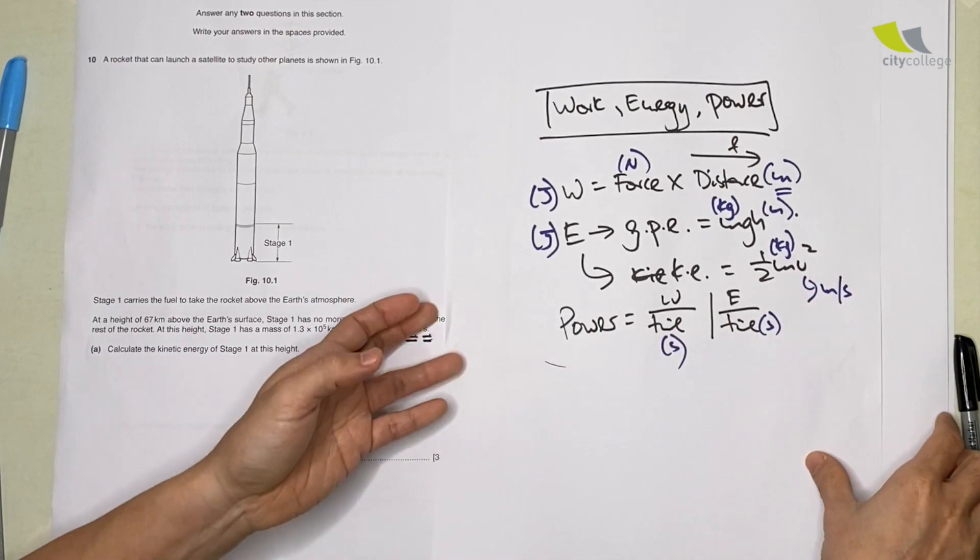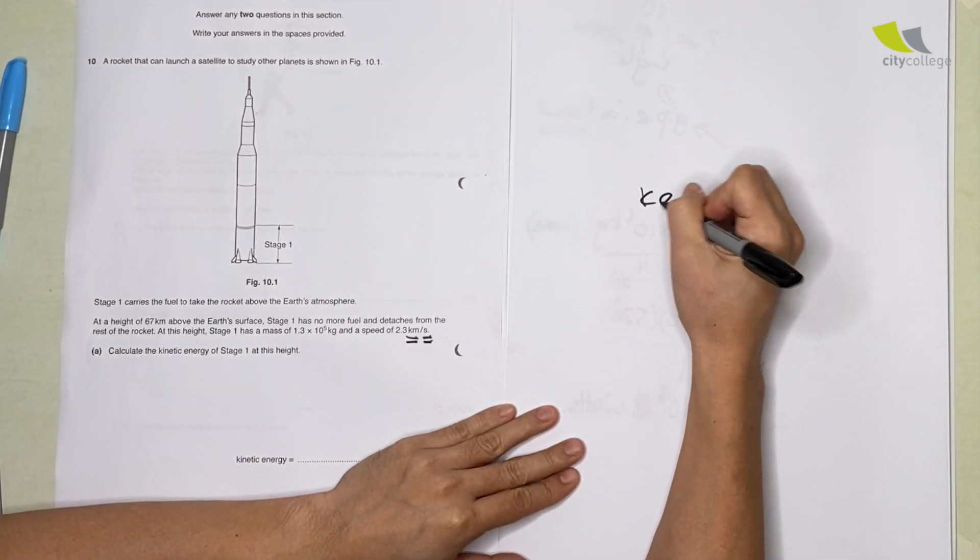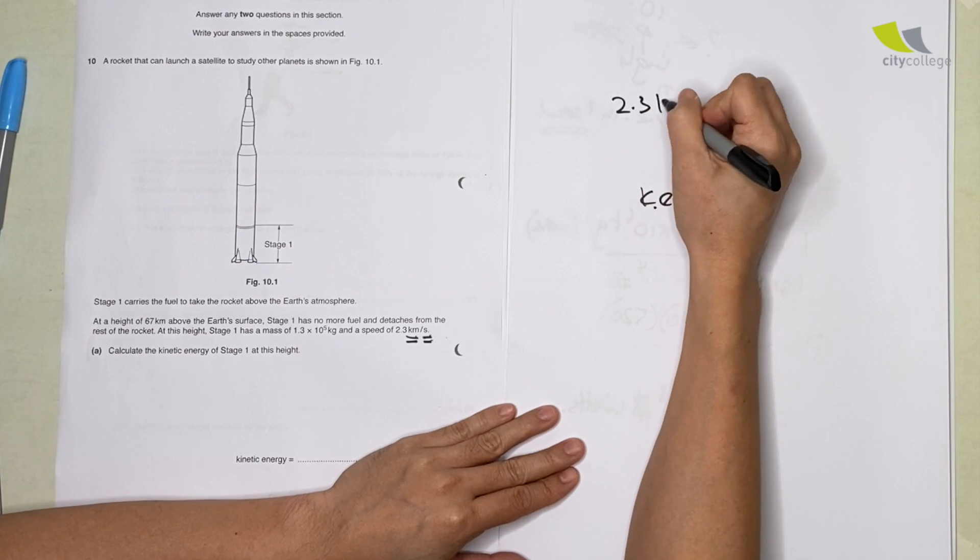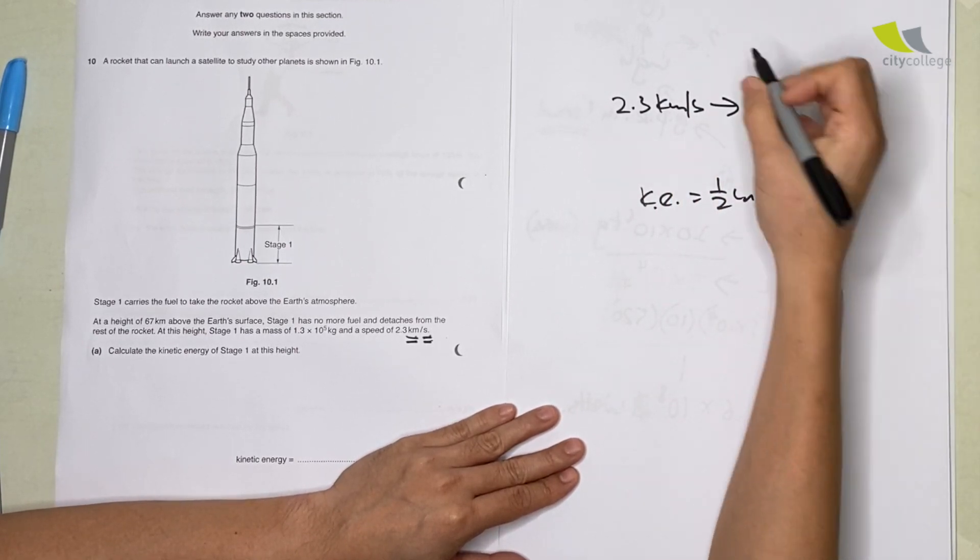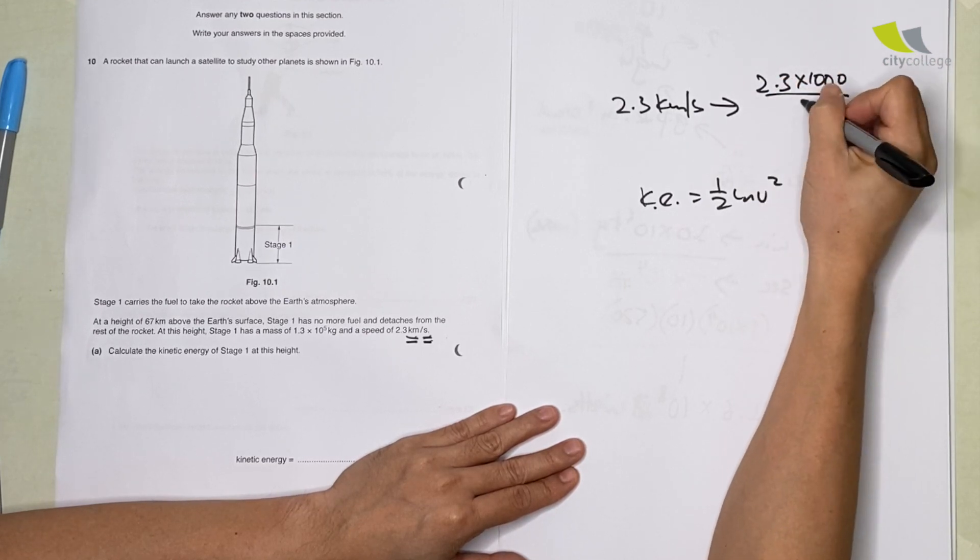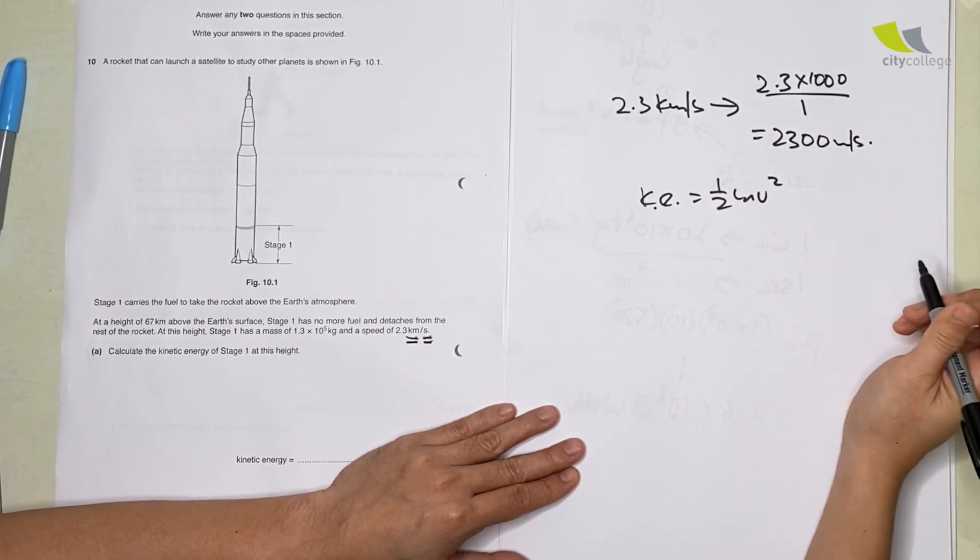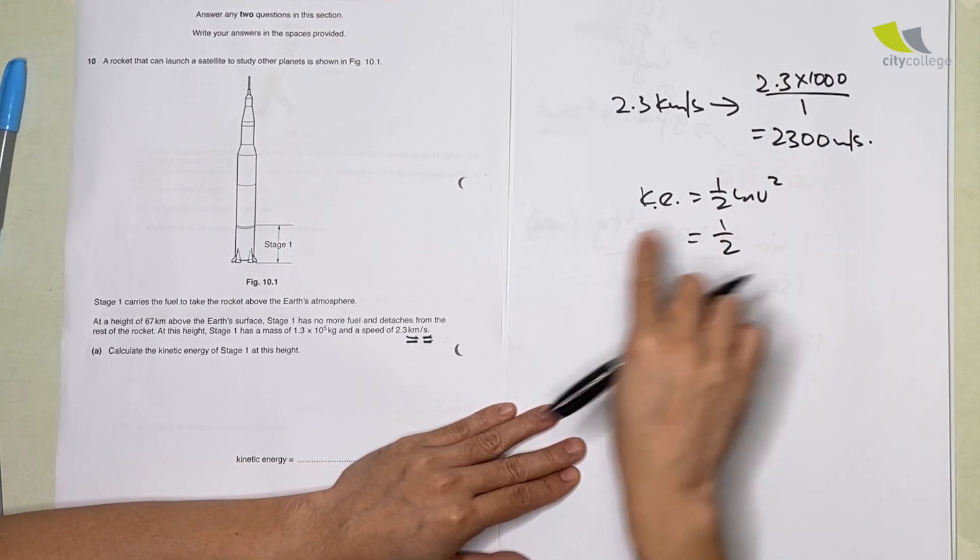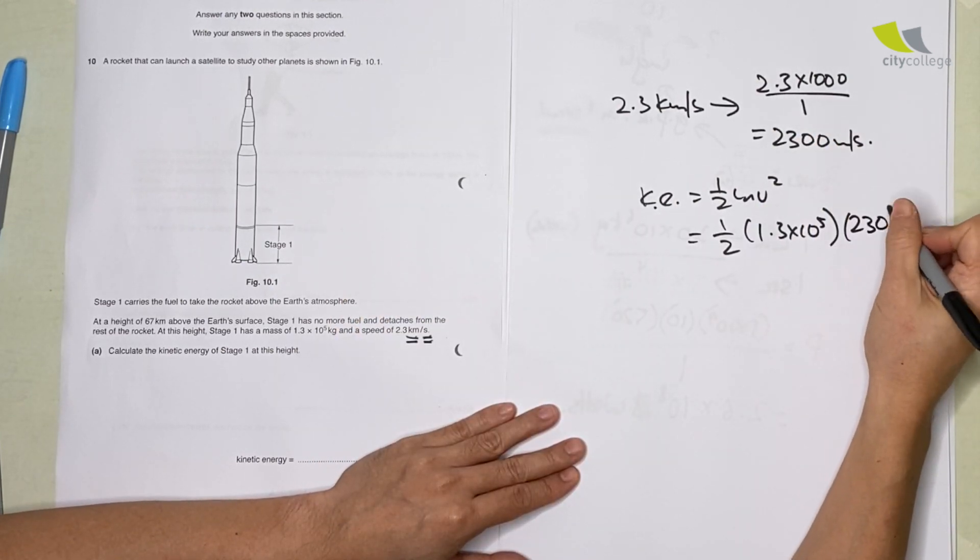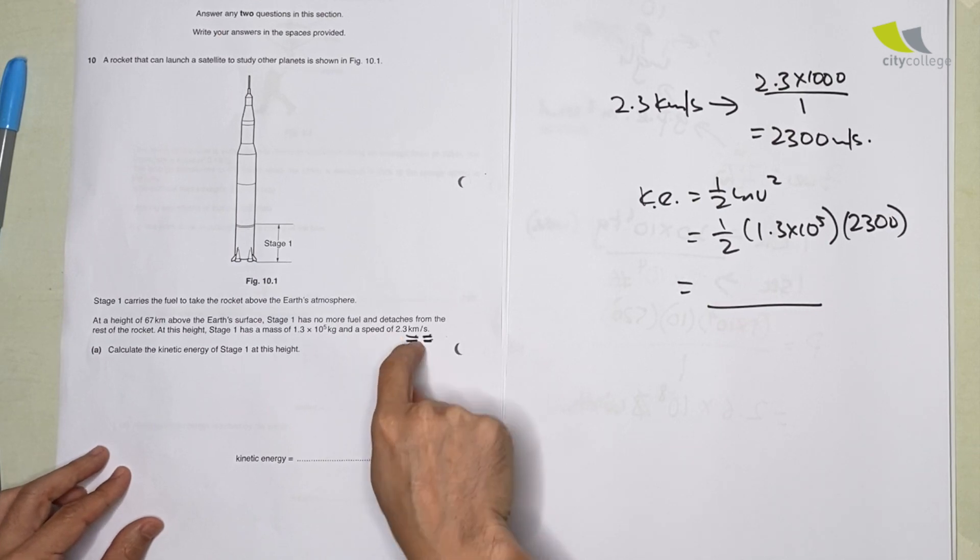That's why they test you. Kinetic energy at stage one: KE equals half mv squared, so this is the easy part. What we need is to convert 2.3 kilometer per second to meters per second. So you have 2.3, to convert kilometers to meters multiply by 1000, seconds is still one, so the answer is 2300 meters per second. Then now we can solve: half mass is in kg, 1.3 times 10 to the power 5, v we use 2300, and you will get your answer.